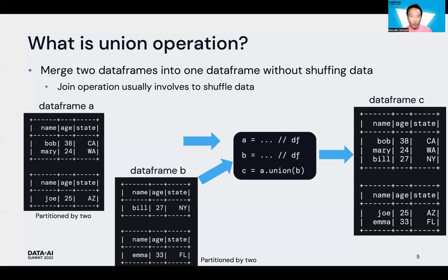In this case, we assume each partition on the two data frames A and B are the same. Thus, the number of partitions of data frame C is still two. If the partitions on data frames A and B are different, the number of partitions of data frame C will be increased — for example, three or four.